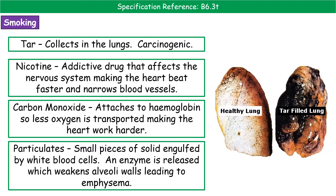First is tar, which collects in the lungs and is carcinogenic — meaning it has a link to causing cancer. Nicotine is an addictive drug that affects your nervous system, leading to a faster heartbeat and narrower blood vessels.